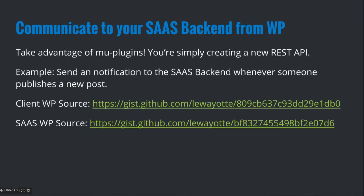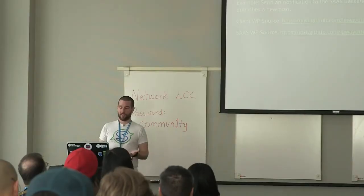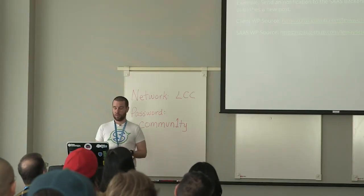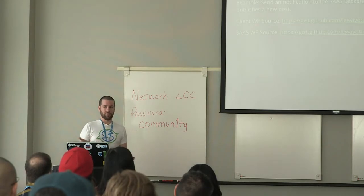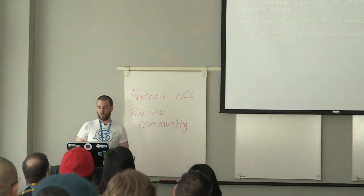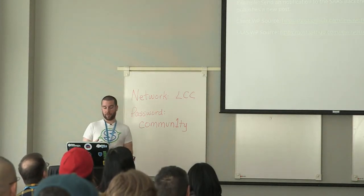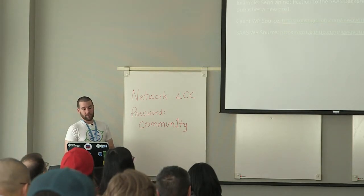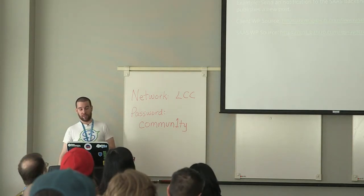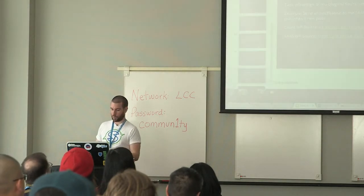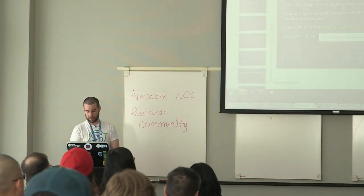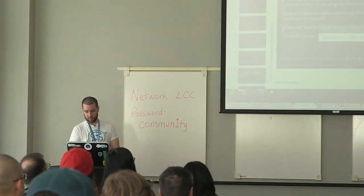To communicate to your SaaS backend from WordPress, you basically need to do the exact opposite of what we did before. I love to take advantage of the MU plugins directory — it's basically creating a plugin that's must-use, that's what MU stands for. You're simply creating a new REST API. An example of this is sending a notification to a SaaS backend whenever someone publishes a new post, which is what LinkMe does.